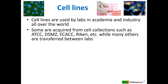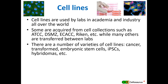Where do people get their cell lines? There are a number of varieties of cell line. I won't go into the biology of cell lines in this course, but people have heard of cell lines like HeLa, which is a cancer cell line. But there are many other types: transformed by virus, embryonic stem cells, pluripotent stem cells, hybridomas to produce monoclonal antibodies — a whole menagerie depending on what people are doing in different labs.